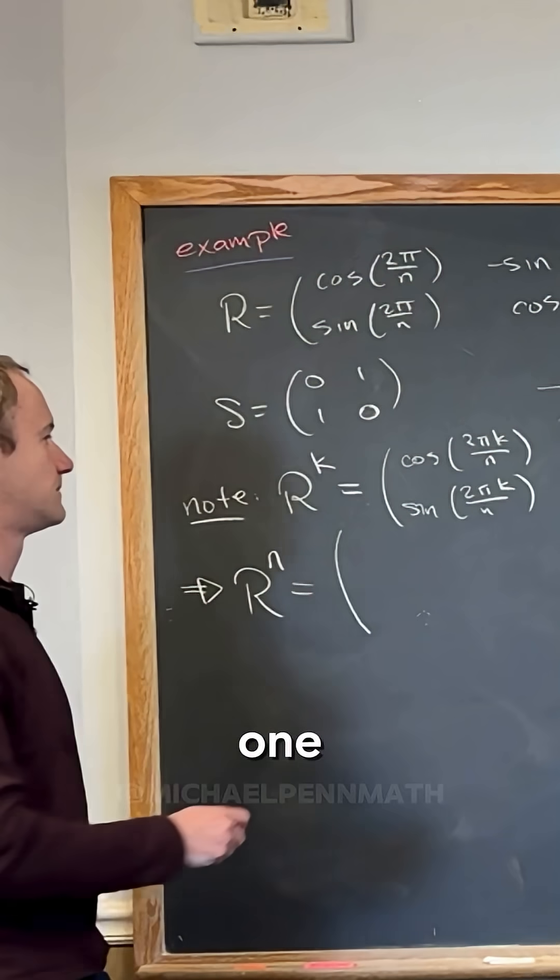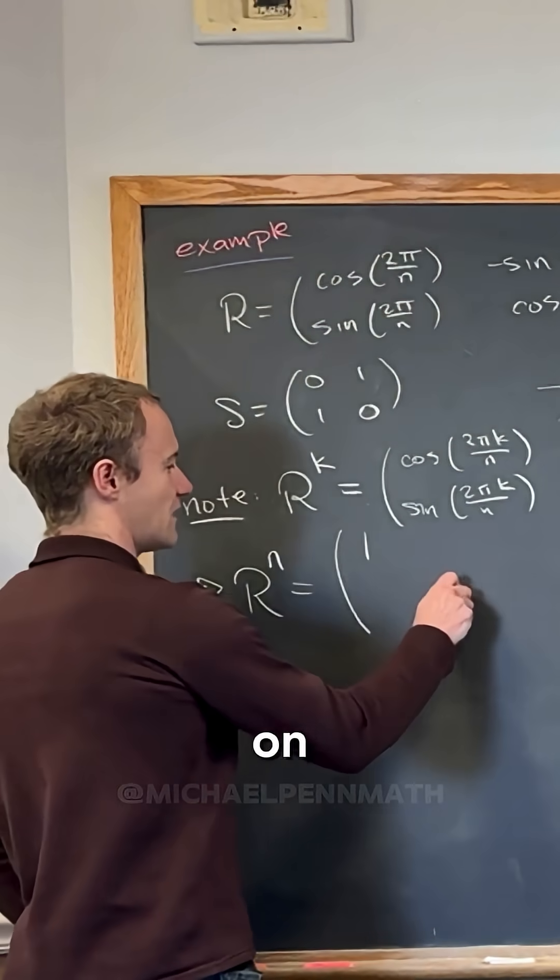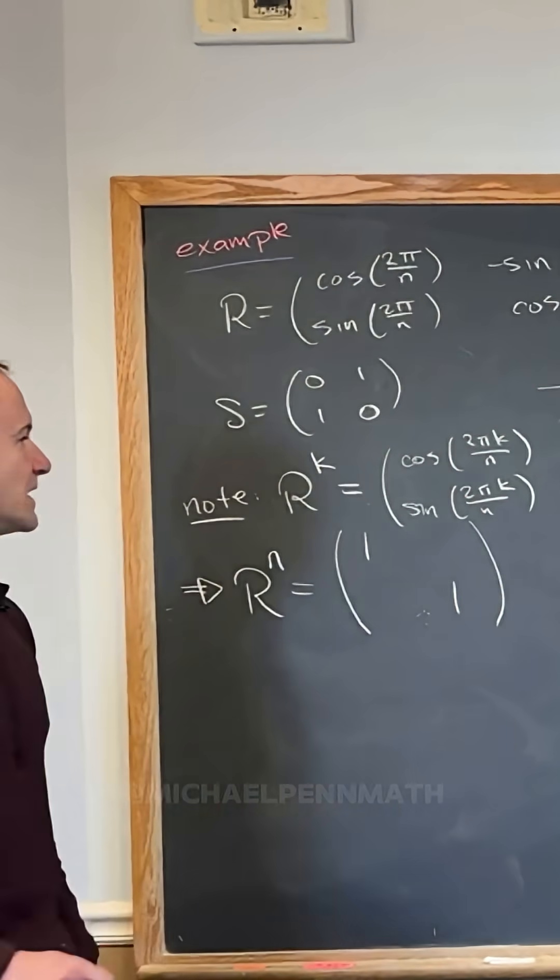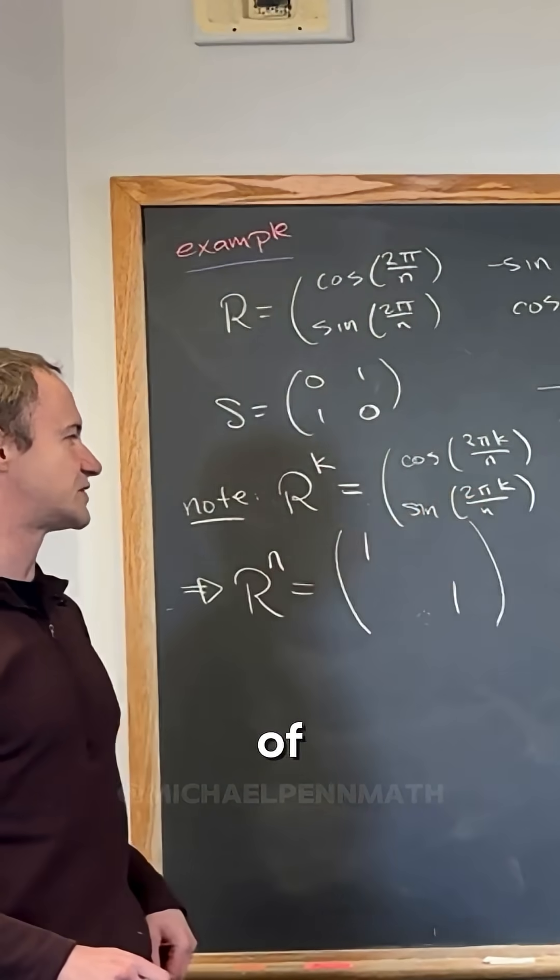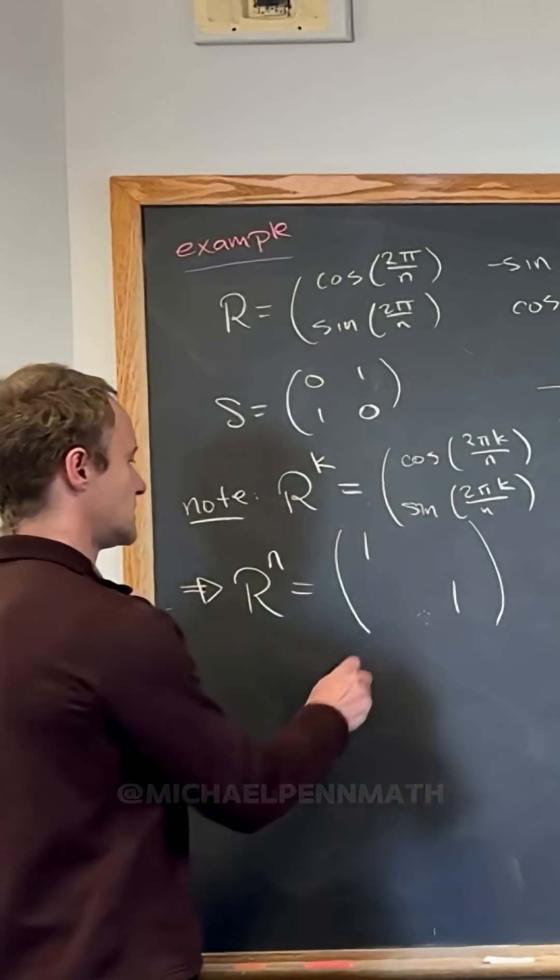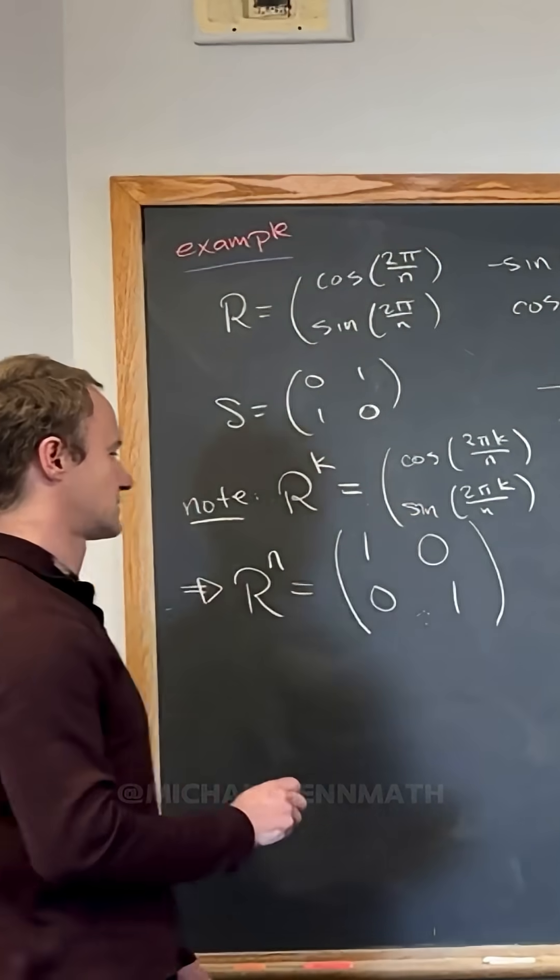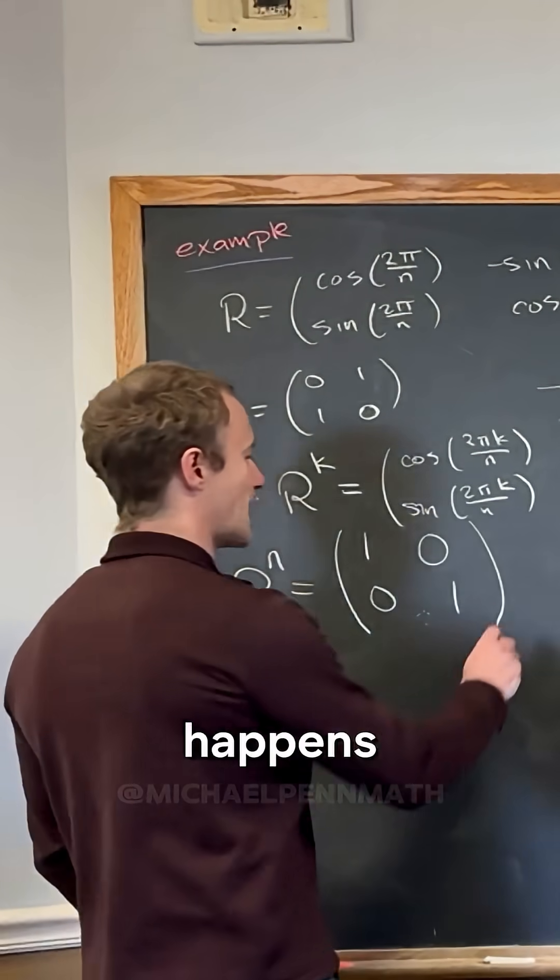So that means here on the diagonal is one, and then this is going to be the sine of 2π, which is 0. So we get the identity matrix.